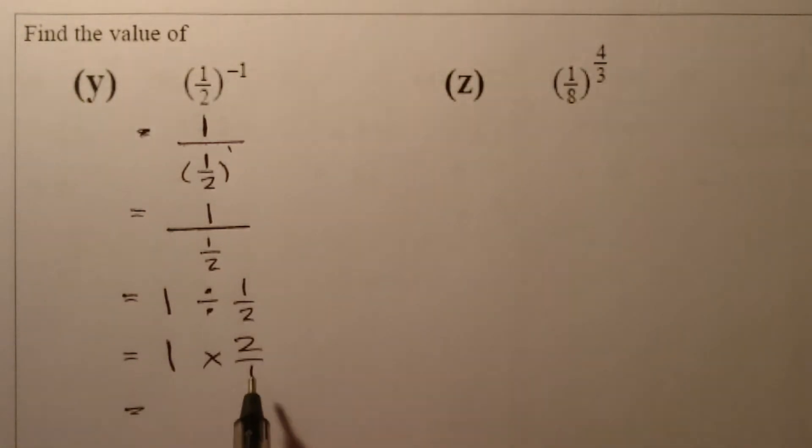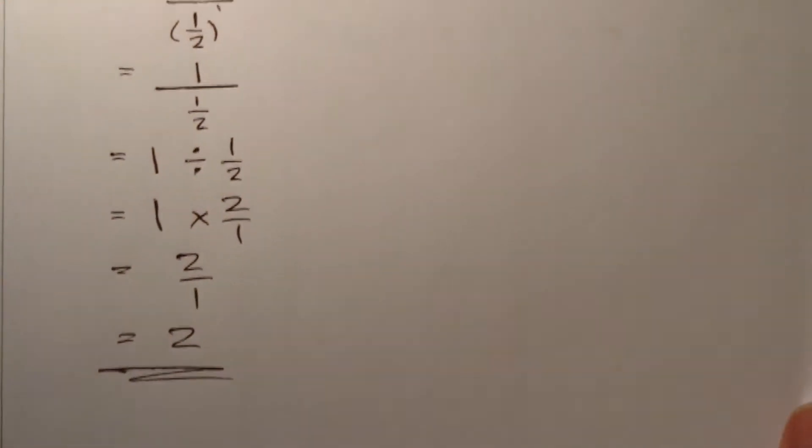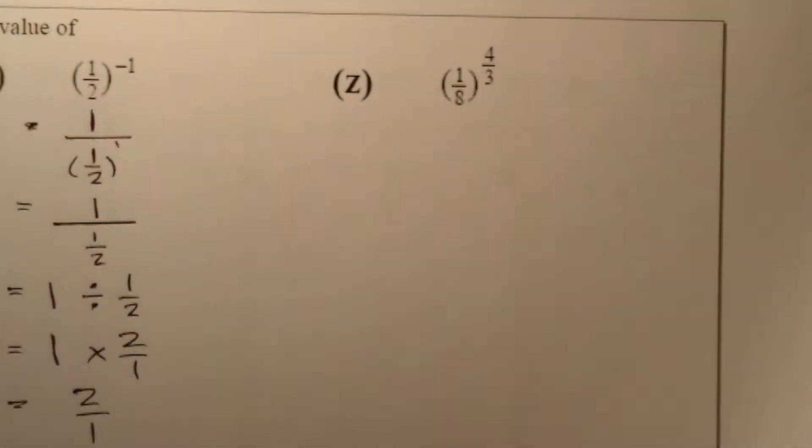Then, one times two over one will leave me with two over one, and that should just give me a straight answer of two. So there's my final answer for that question there. Now the last one.